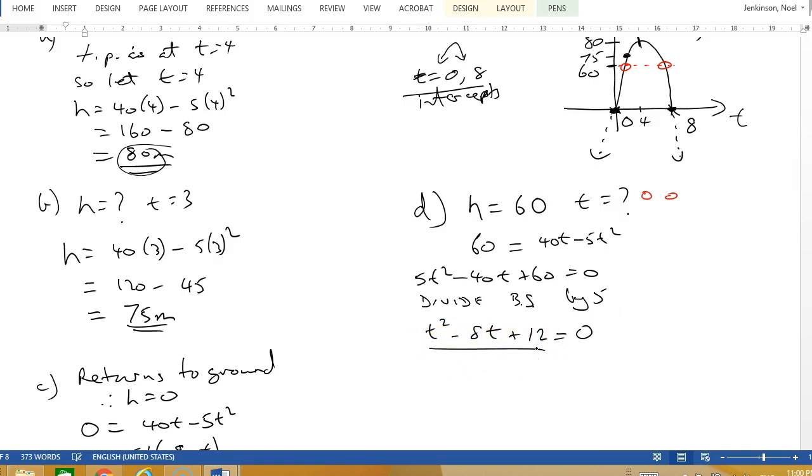Now this is a lot more simple to solve. It's a cross method with t and t. Multiply to 12, so it could be 3 and 4s, add to 8?